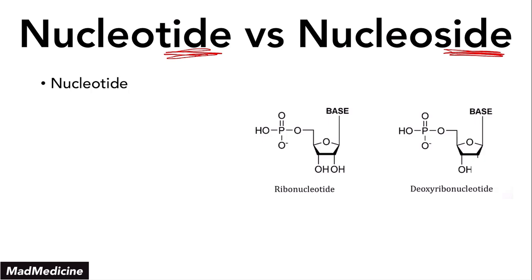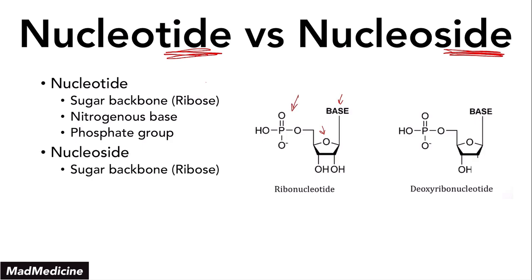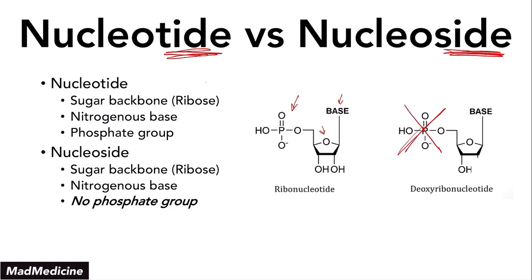A nucleotide has a sugar backbone — the ribose sugar — it has the nitrogenous base, and it also has the phosphate group. A nucleoside, on the other hand, has the sugar backbone and the nitrogenous base, but it does not have the phosphate group. There is no phosphate group in a nucleoside.